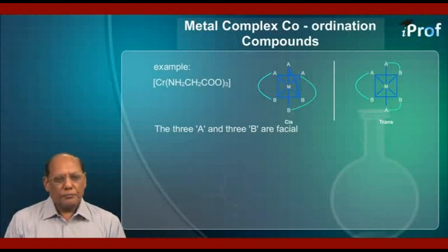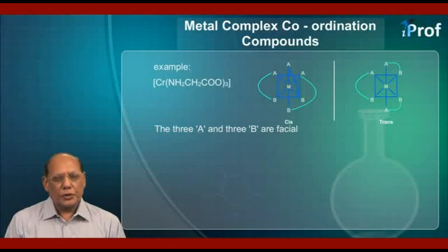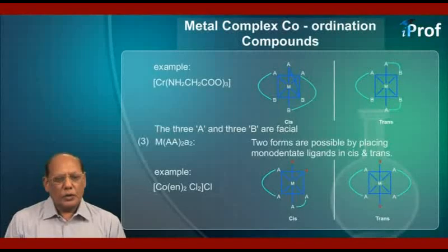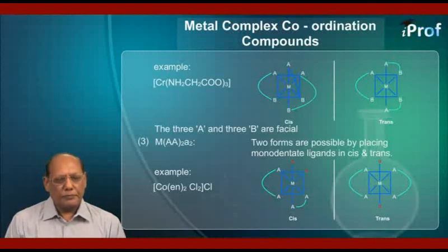As shown here, there are two forms: cis and trans. In the cis form, we see that the three A atoms and three B atoms are facial. It is not so in the case of trans. The next formula, number three, is M(AA)2A2. An example of that is [Co(en)2Cl2]Cl, where the counter ion is a chloride ion. Two forms are possible by placing monodentate ligands in cis and trans positions as shown below.